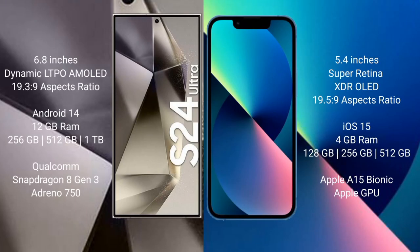The Samsung Galaxy S24 Ultra comes with a 6.8-inch dynamic LTPO AMOLED display and aspect ratio 19.3:9. The iPhone 13 Mini comes with a 5.4-inch Super Retina XDR OLED display and aspect ratio 19.5:9. The S24 Ultra runs on Android 14, while the iPhone 13 Mini runs on iOS 15.